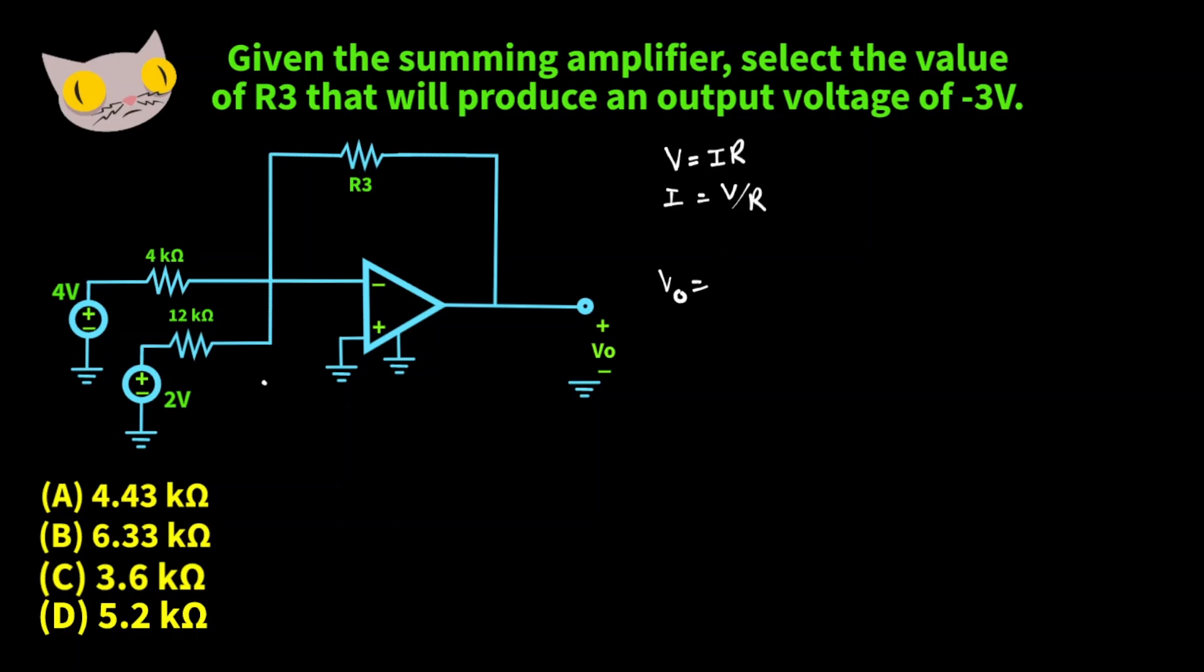But since we don't have a current stated anywhere on the diagram we'll have to use V over R. So we're negative 2 volts, and we want to make sure our current is negative. And we want to multiply that by R3 minus negative 2 volts over 12,000 ohms.